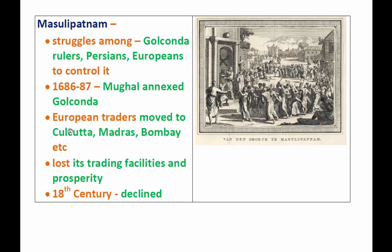After the Mughal annexation, European traders moved to Kolkata, Madras, and Bombay. Masulipatnam had been a very popular trade center, but when Europeans moved to other places — Kolkata, Madras (Chennai), and Bombay (Mumbai) — the port lost its trading facilities and prosperity, and ultimately declined in the 18th century.